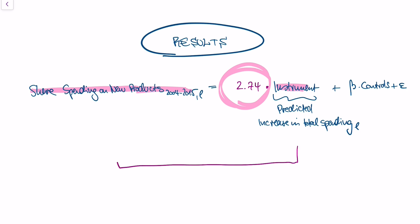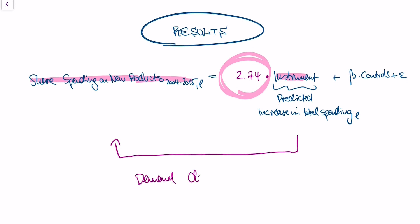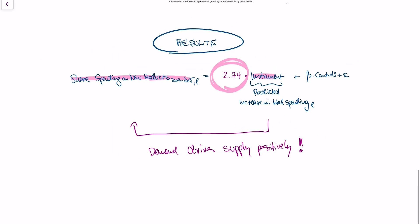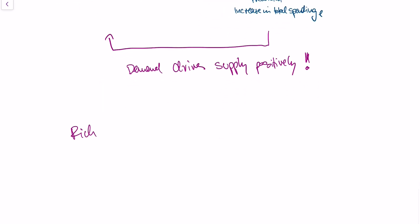And what we say is this is actually a causal estimate. So what we find is that demand drives supply positively. And we can actually pin a number to this. And remember, why can we say this? Because we say that the shock in the income distribution has nothing to do with supply. The fact that there are more rich people in America has to do with how the social welfare system works, how wages work, and how inheriting works. And this drives demand positively.